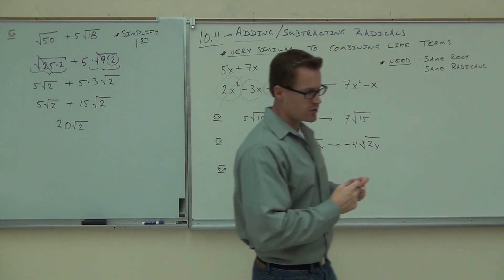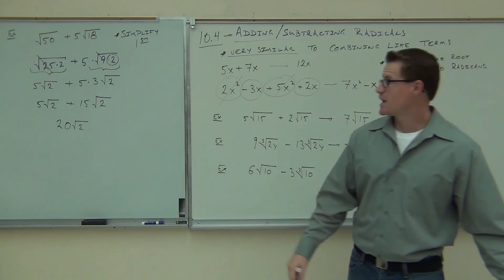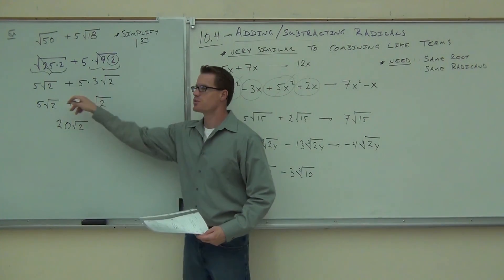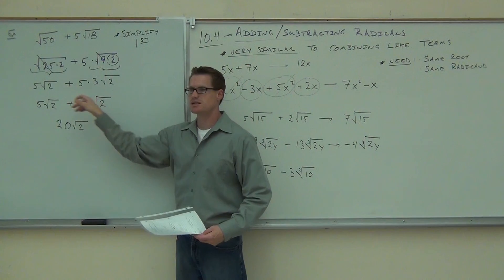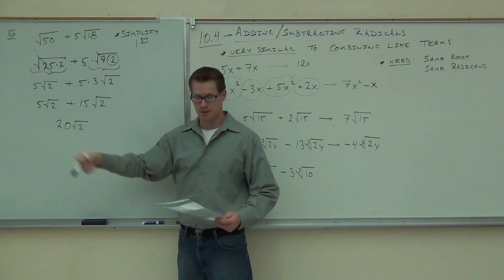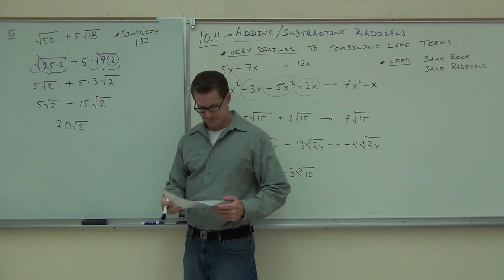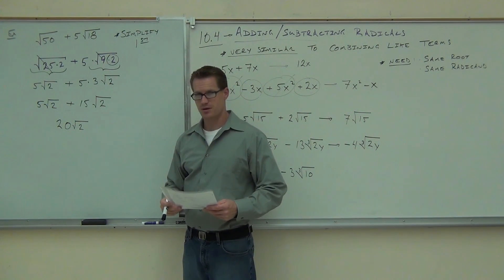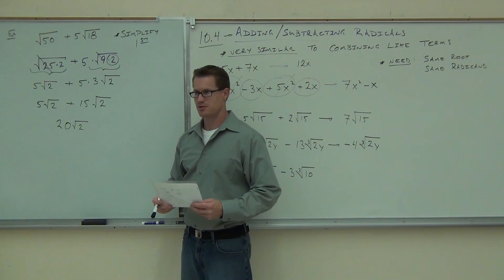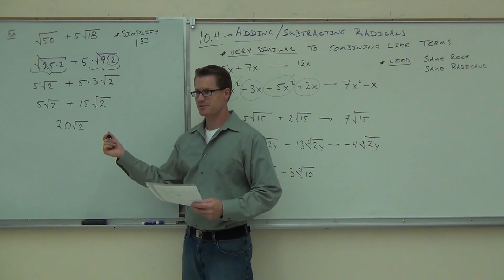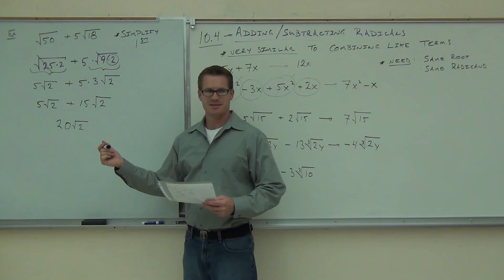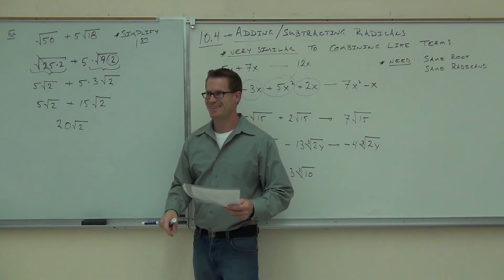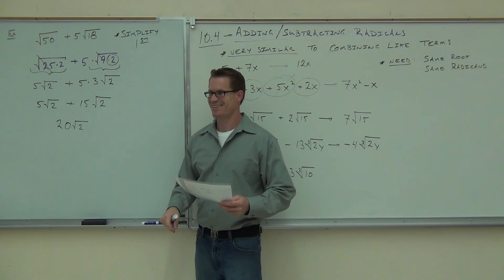So we're simplifying those radicals first. A lot of times we're going to get the situation where we have the exact same root and same radicand after simplifying, and we can add them together. Questions on that one? All right.